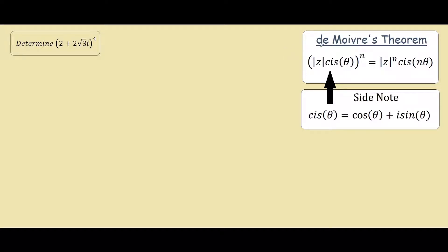Hey guys, the aim of this video is to use de Moivre's theorem to solve this problem: 2 plus 2 square root of 3i raised to the power of 4. So first of all, let's begin by changing this Cartesian form to polar form so that we can use the theorem.